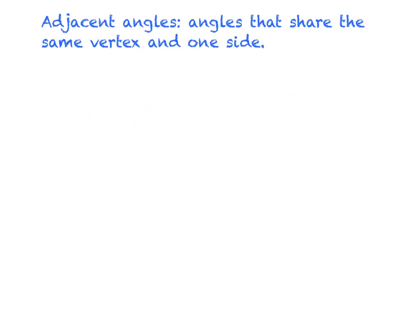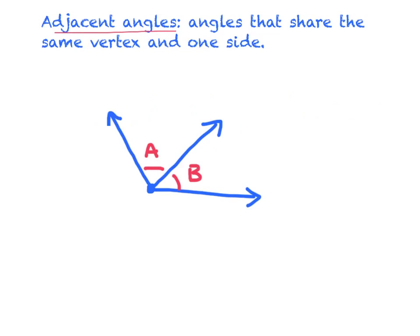The first type of angle is called an adjacent angle. Adjacent angles are angles that share the same vertex and one side. I drew a couple angles here — angle A and angle B. They are called adjacent because they share a vertex and they share a side. You can trace angle A and angle B and see they share that common side and the same vertex.